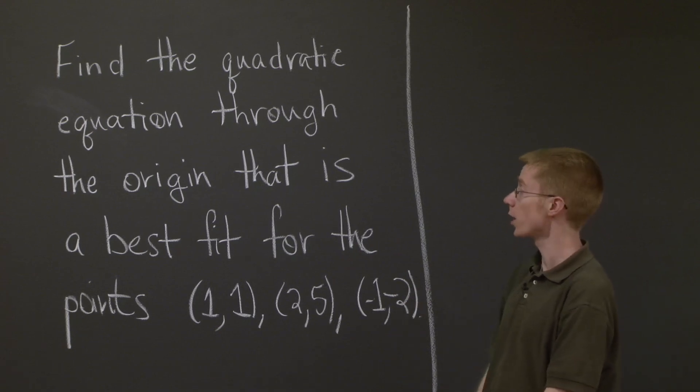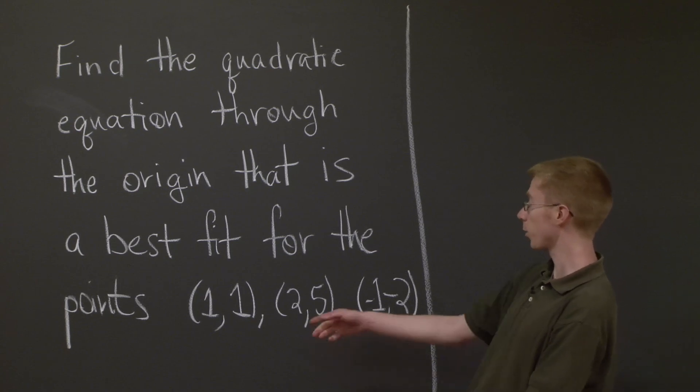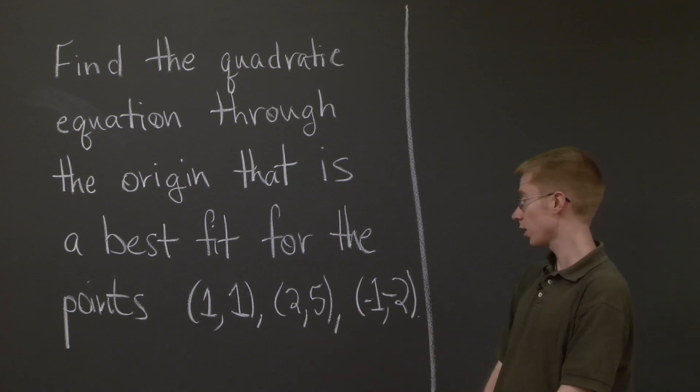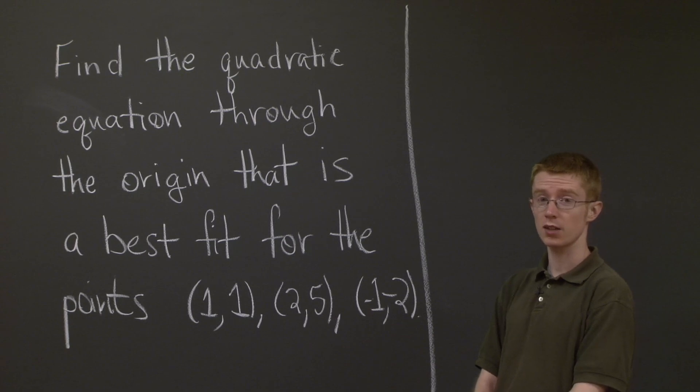Find the quadratic equation through the origin that is a best fit for these three points: (1,1), (2,5), and (-1,-2).